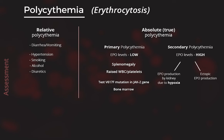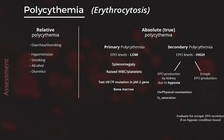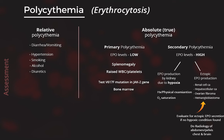In secondary polycythemia, clinical history and examination, including measurement of oxygen saturation, will identify most patients with polycythemia secondary to hypoxia. If no disease that can stimulate increased erythropoietin levels is found, then look for tumors that can be the reason for ectopic erythropoietin production. Do imaging of the abdomen, pelvis, chest, and brain.